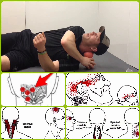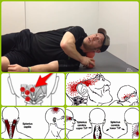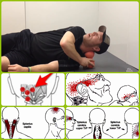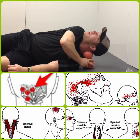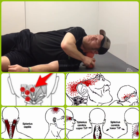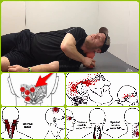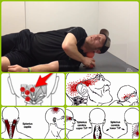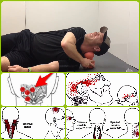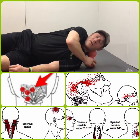You can also position the peanut at the base of the skull on one side and just move your head around. This may take around 10 minutes or so to work that tissue, and as you work it, it feels really good — so you'll naturally start spending a little more time on it.